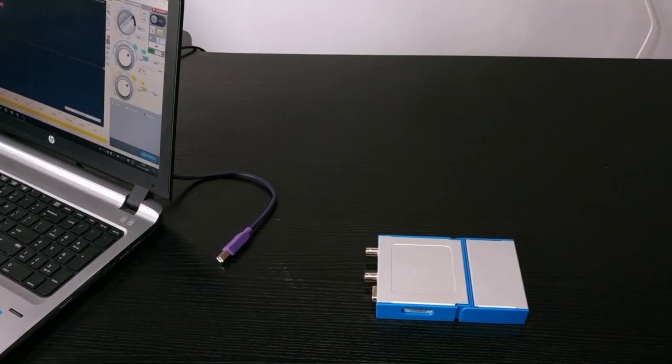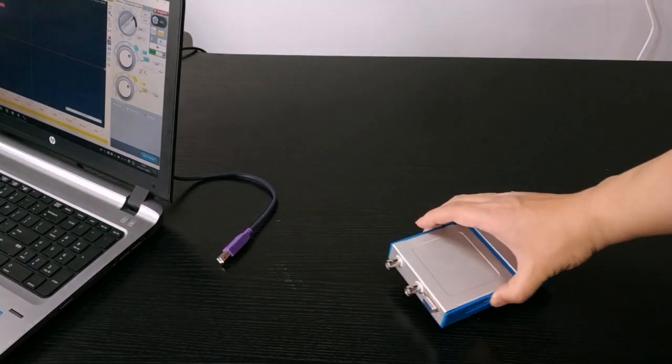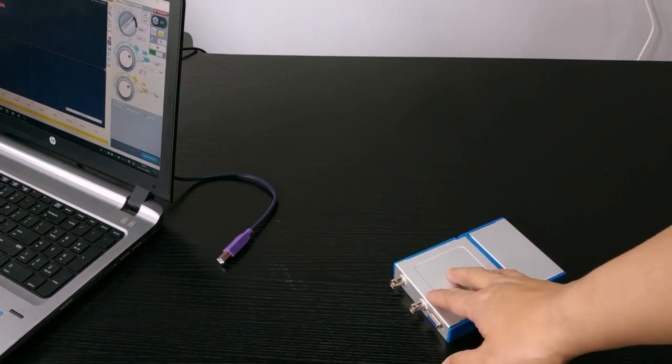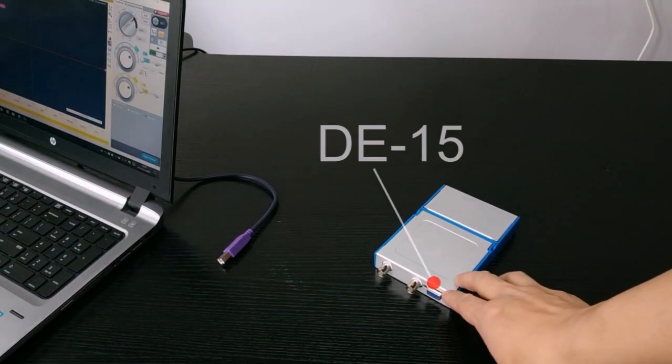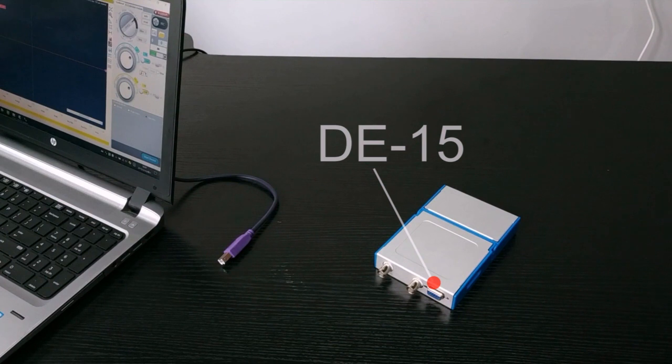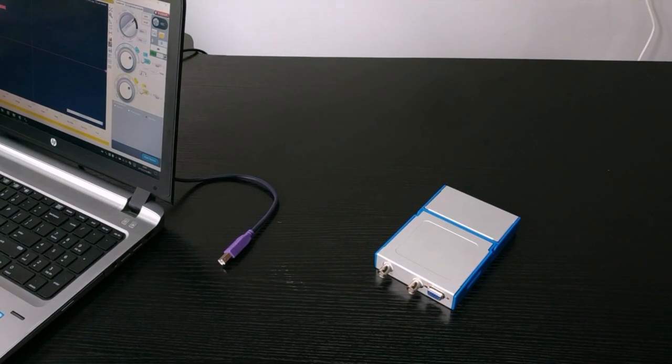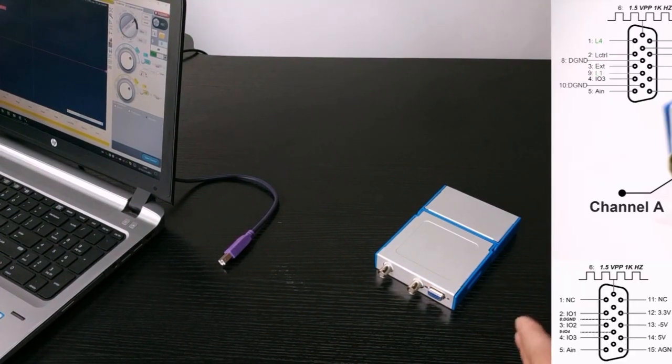Let's see in detail the signal generator module. We connect the channel A of the oscilloscope to the output of the signal generator. We can already see on the software the wave generated by the signal generator.